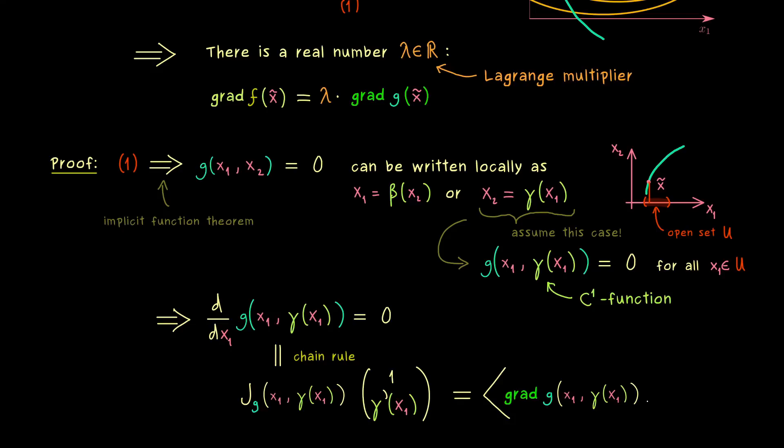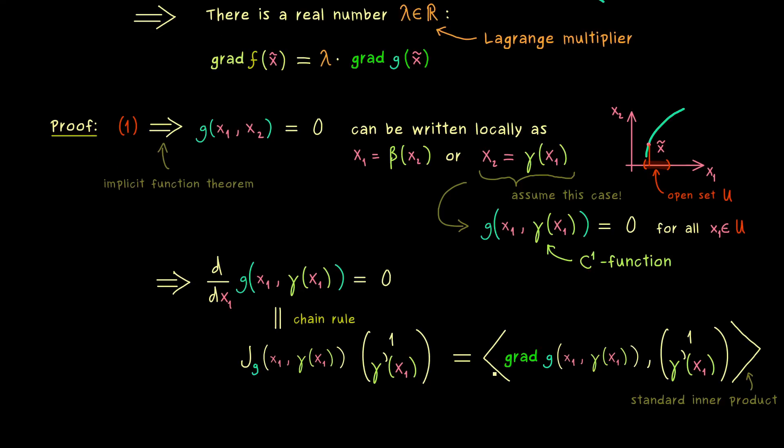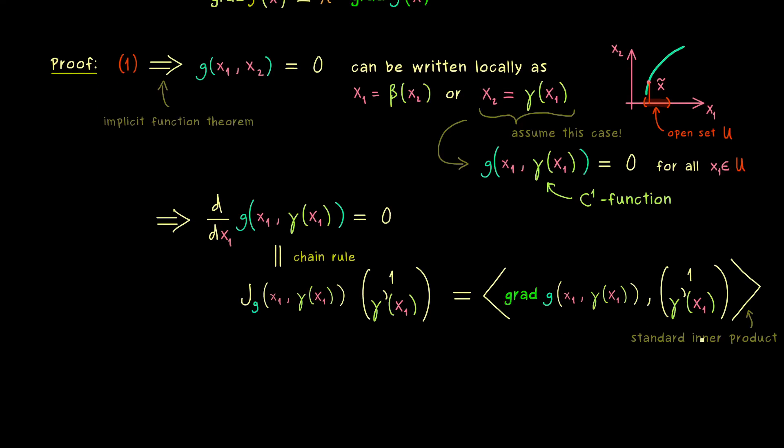And if we do that we have the standard inner product here. And by our calculation here we see that this inner product is 0. So in other words we have that the gradient of g is orthogonal to this vector here. And we get that this orthogonality holds for all points in the open set U.